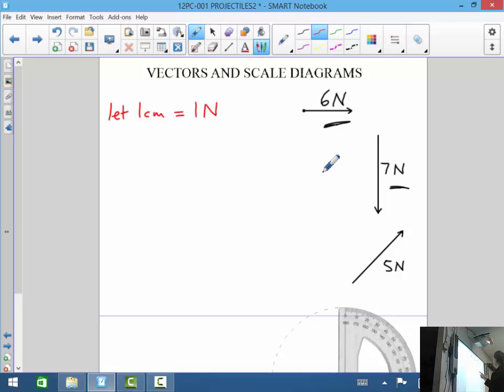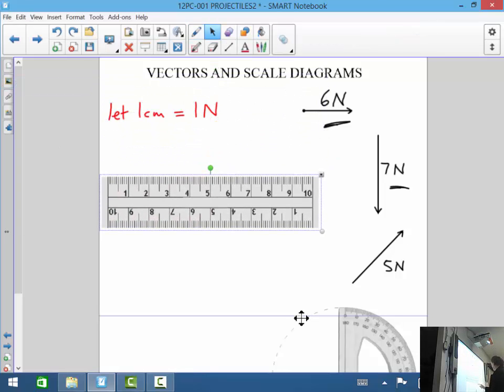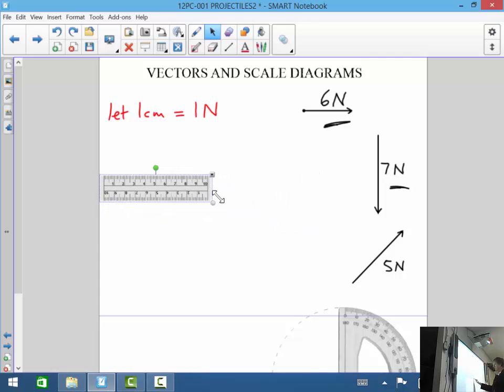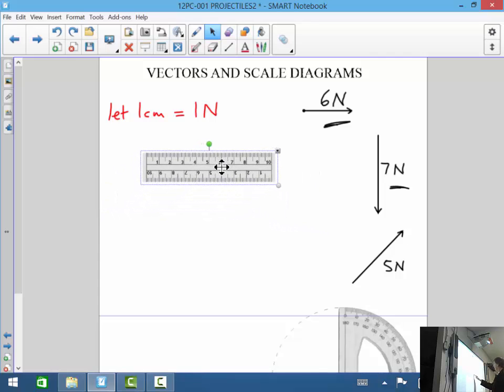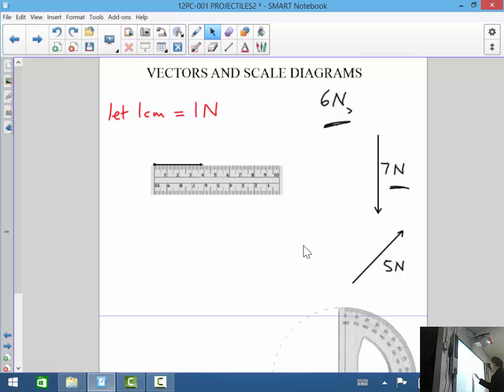All that means is you need to draw a 6 centimeter line to scale to represent that vector. So you get a ruler and do 6 centimeters. You get a ruler there, and we might scale this a bit here. So you draw a line here for 6 centimeters. Start it there and make sure that goes out to 6 centimeters.